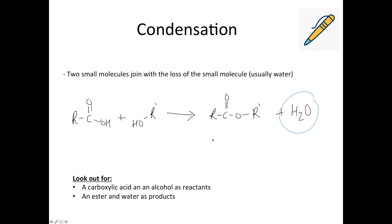You will see condensation reactions for making esters and also for making proteins or amides. This example shows making an ester — you'd be looking for a carboxylic acid and an alcohol as reactants, and then you end up producing your ester and water. It could also just be two other molecules joining with the loss of a small molecule, so it really depends on the reaction you're given.